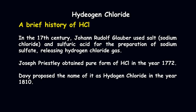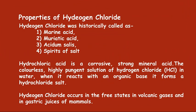In the year 1648, Glauber first prepared HCl gas from rock salt. Scientist Priestley in the year 1772 prepared HCl, and Davy proposed the name hydrogen chloride for the gas in the year 1810. Surprisingly, hydrogen chloride was historically called muriatic acid and spirits of salt.